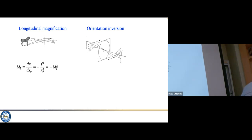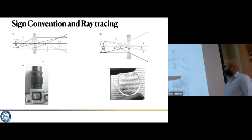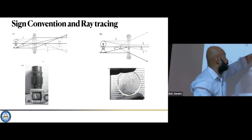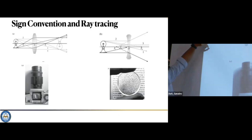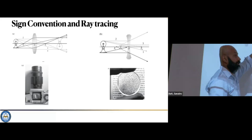I want to introduce depth of field and brightness. But first let me quickly go over the ray tracing and sign conventions on this PowerPoint. We introduced three rays in the ray tracing diagrams. The first ray, the chief ray, goes straight through the center of the aperture of the lens — through the center — and that ray is undeviated.